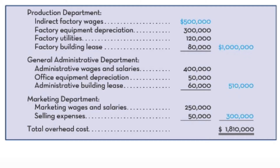Here are the overhead costs we have to assign — both manufacturing and non-manufacturing overhead costs. In the production department: indirect factory wages, indirect labor, factory equipment depreciation, factory utilities, factory building lease — a million dollars in overhead that needs to be assigned to those activity cost pools. In general and administrative departments, another $510,000 needs to be assigned, and in the marketing department, $300,000. So we have total overhead costs of $1,810,000 to assign to these activity cost pools, or if they don't belong in any cost pool, they go into the other category — organization-sustaining activities.